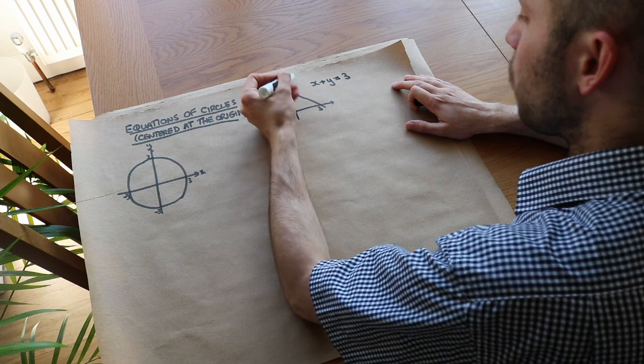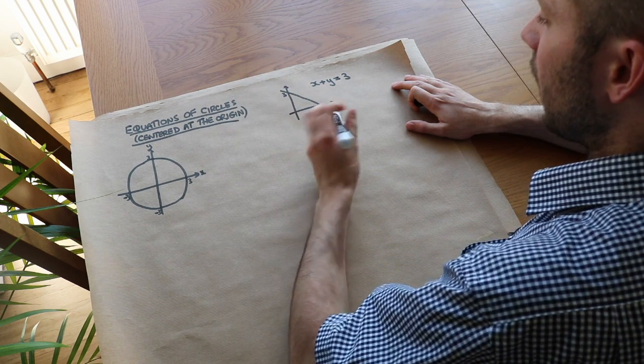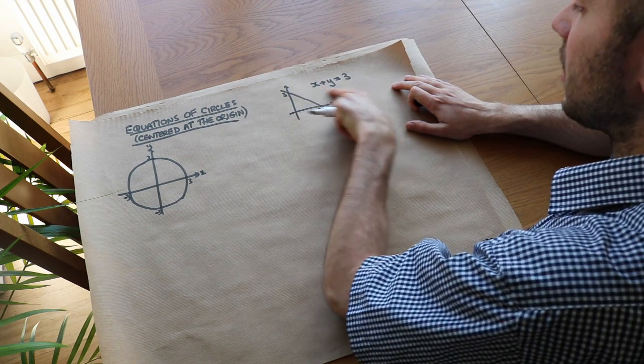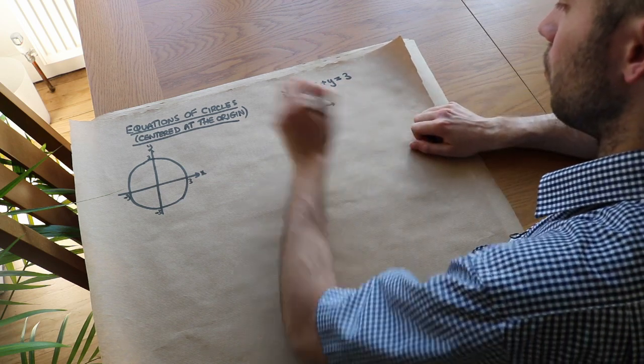And what that means is whatever point we pick on this line, this is like a membership rule. It dictates if a point is on the line, it has to obey this particular rule.